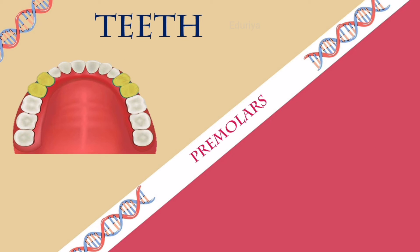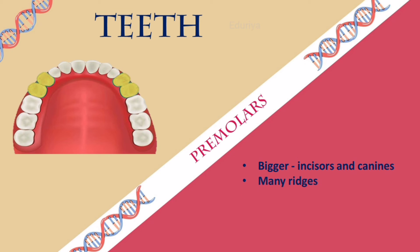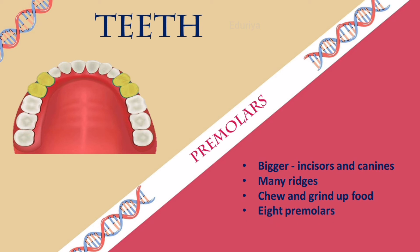Premolars are bigger than the incisors and canines. They have many ridges and help chew and grind up food. Adults have eight premolars. The first and second premolars are the molars next to the canines. Young children do not have premolar teeth — these first appear as permanent teeth when children are 10 to 12 years old.